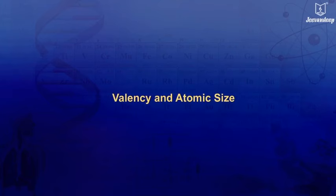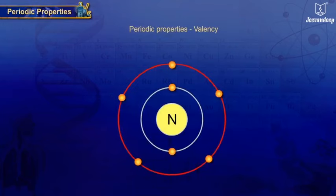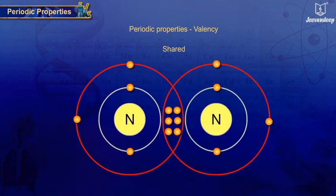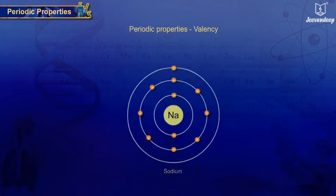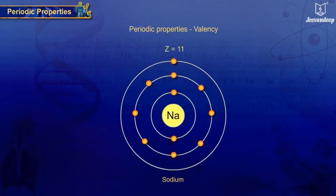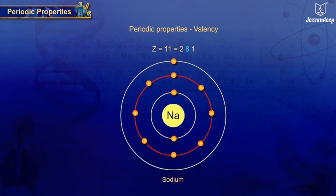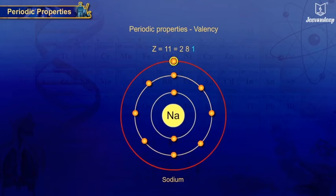Valency and atomic size — periodic properties. Valency of an element is the number of electrons lost, gained, or shared by an atom to obtain a stable electronic configuration, that is eight or two electrons in the outermost shell in a chemical reaction. For example, sodium atom with atomic number 11 has two electrons in the first shell, eight electrons in the second shell, and one electron in the outermost shell — that is the valence shell. Thus the number of valence electrons is one.